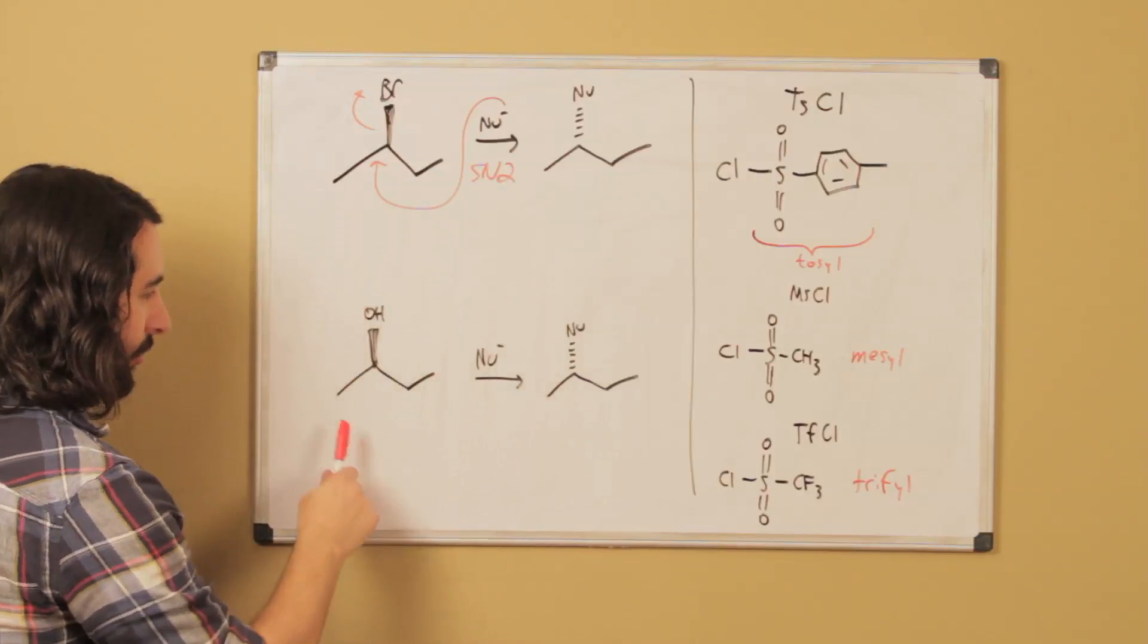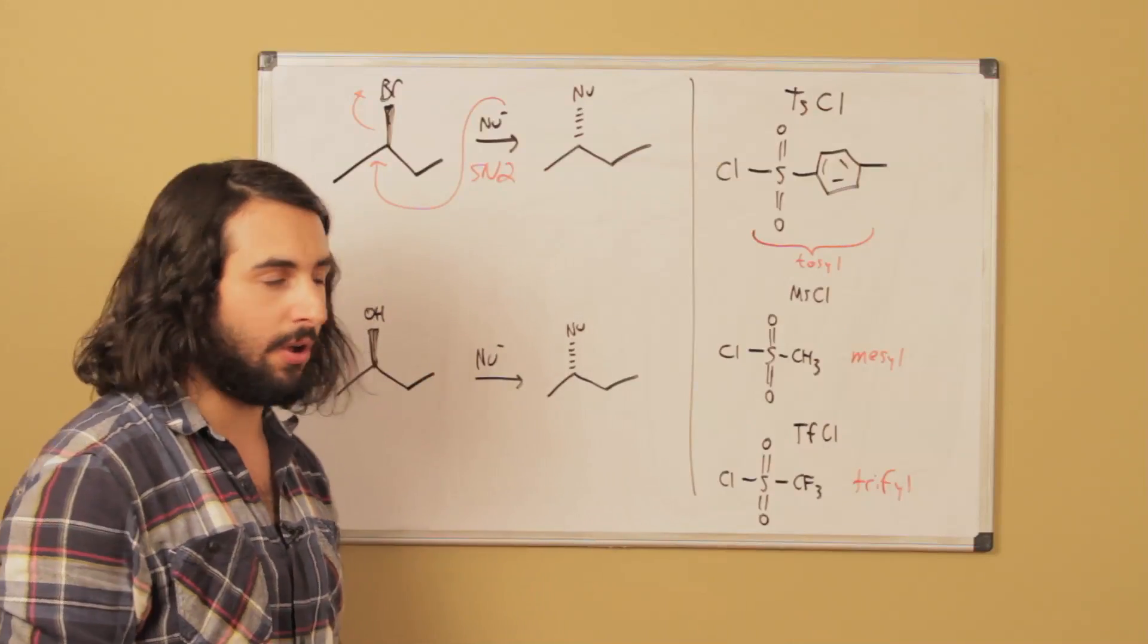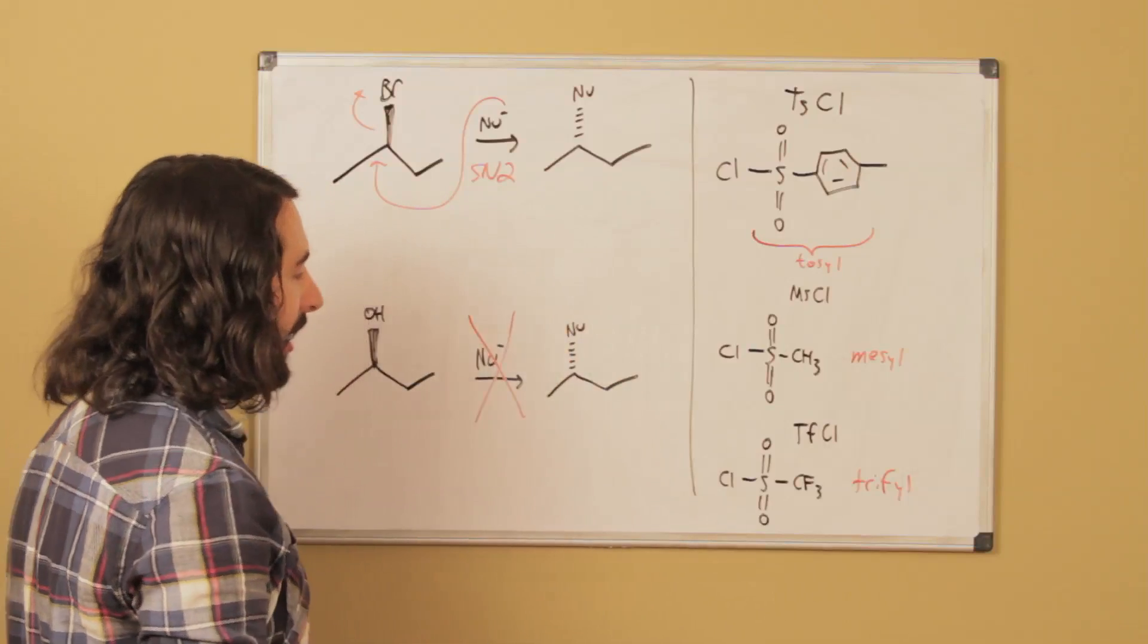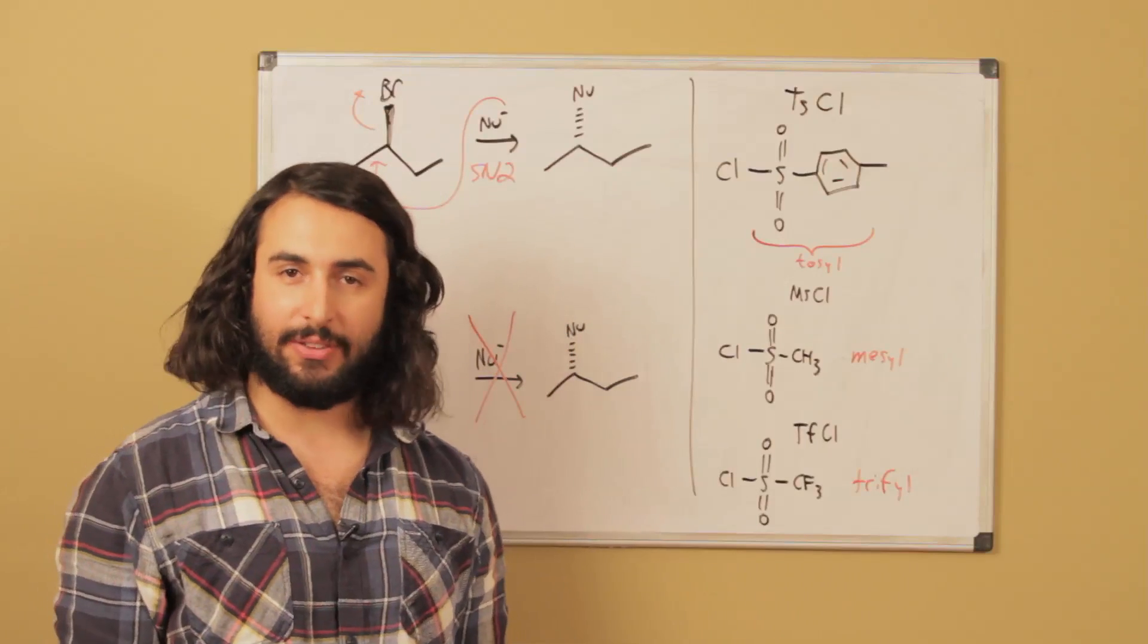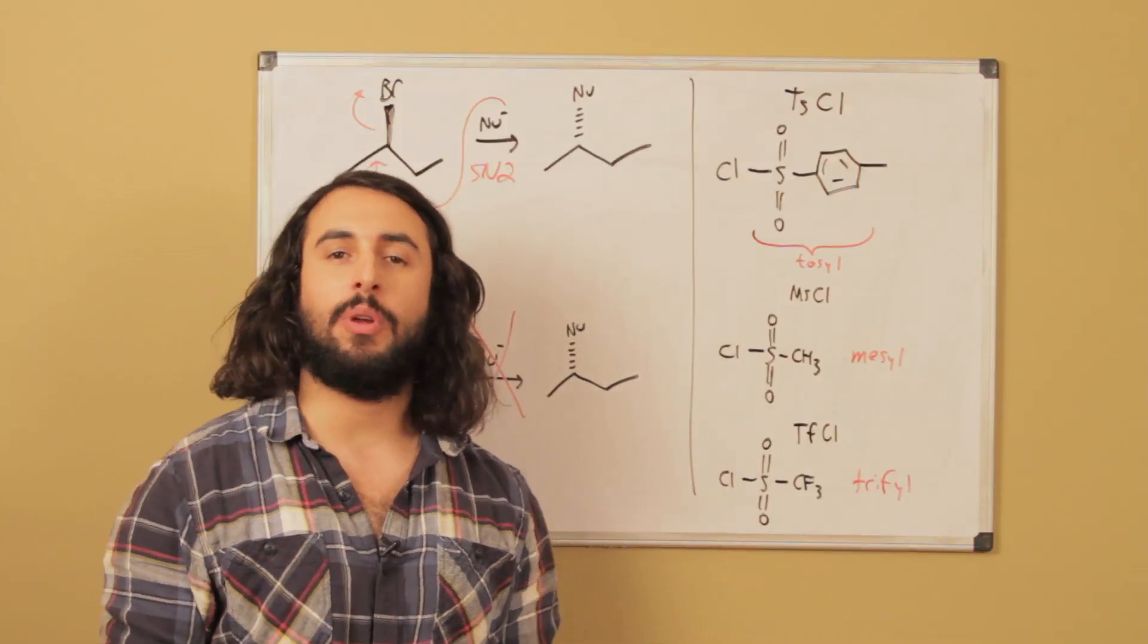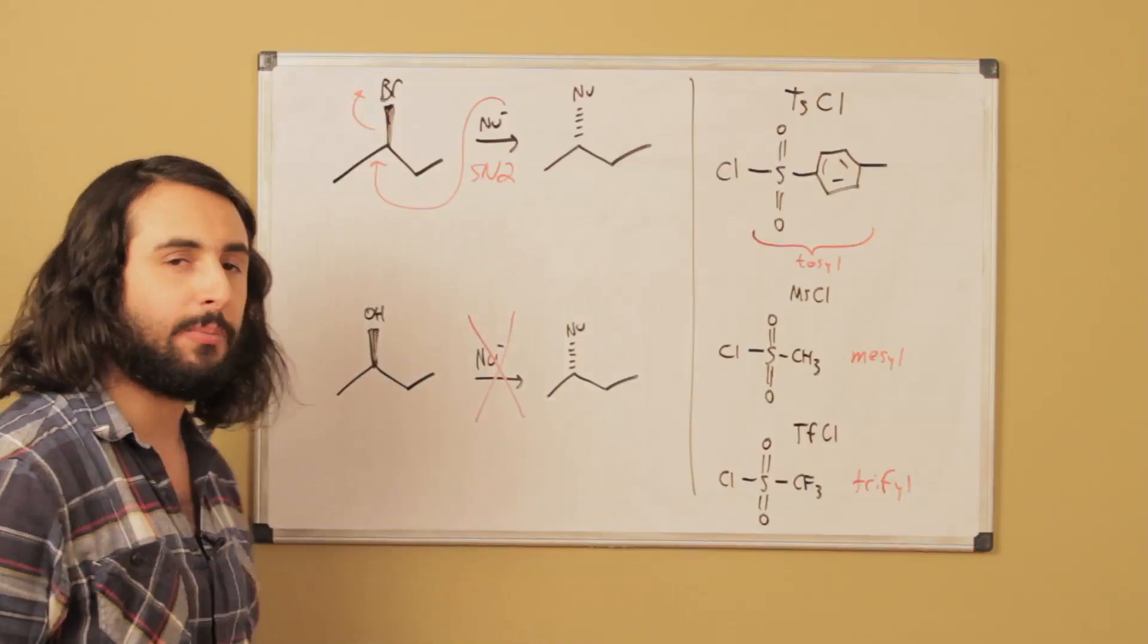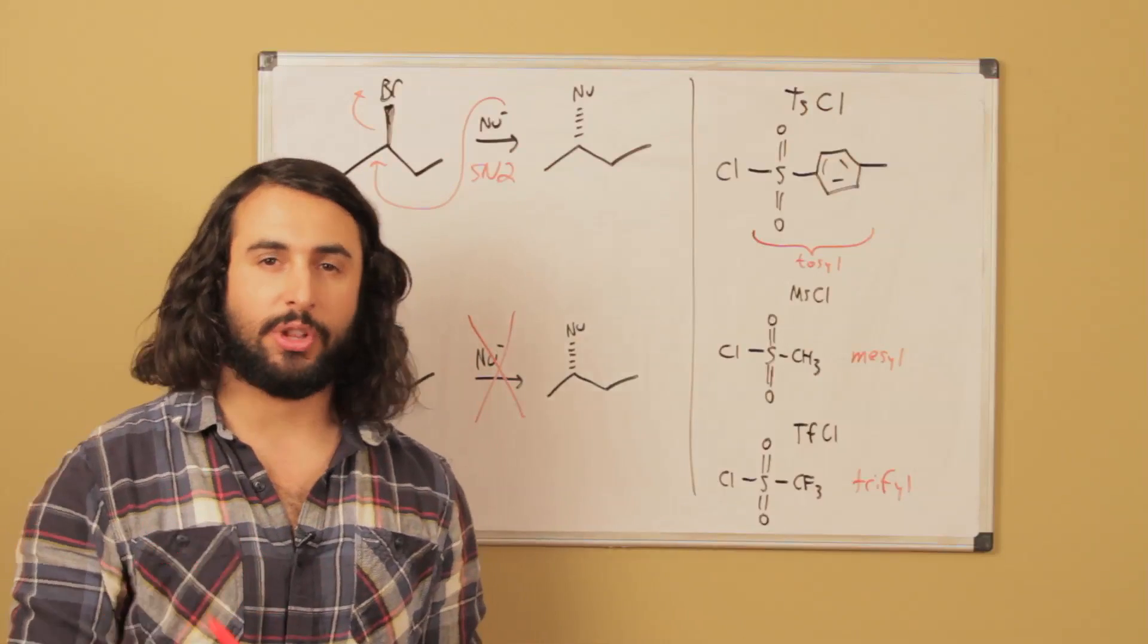Let's say we have a hydroxyl group here. If we wanted to do SN2 on this alcohol, well that's not going to work because a hydroxyl group is not a good leaving group in a substitution reaction. So let's say we really had our heart set on SN2 at this hydroxyl position for some reason in our synthetic pathway. We really want to do an SN2 right there. Well, what could we do?